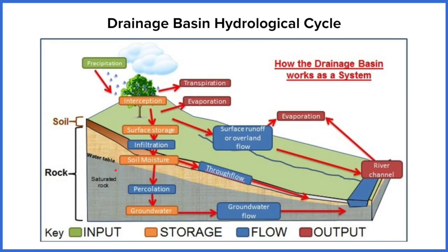If water does stay in the soil, it will eventually move further down into the water table and into the rock. When water moves from soil into rock it's called percolation, and from there it's stored as groundwater. Groundwater tends to stay there for longer periods of time before moving as groundwater flow back into the river channel.